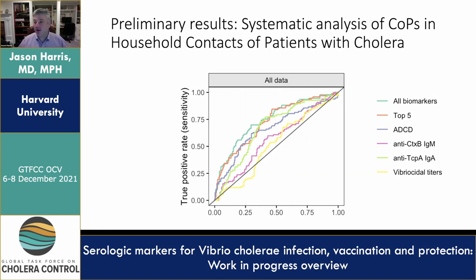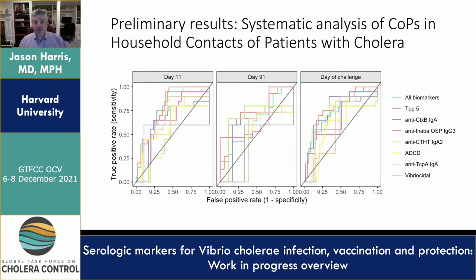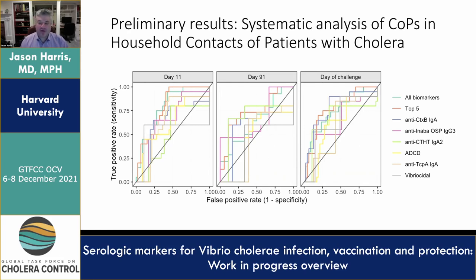What surprised us a little bit was when we looked at the human challenge model, using samples from a cohort of individuals vaccinated with Vaxchora — the CVD-103 vaccine — and then challenged with N16961. You don't predict very well who gets infected using these immune markers either. Even using all our combination of markers, we still have a limited ability to predict following vaccination who's going to be protected or not. That just shows we are still not there in our quest to develop ideal correlates of protection for cholera vaccination, but this systematic approach does shed light on the situation and is probably a good methodology for evaluating new markers of protection.